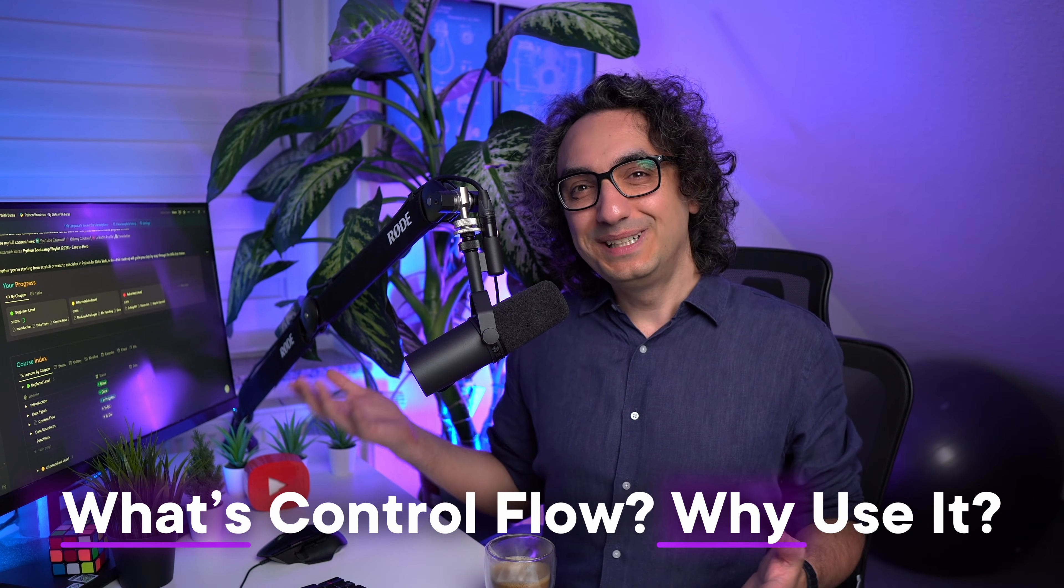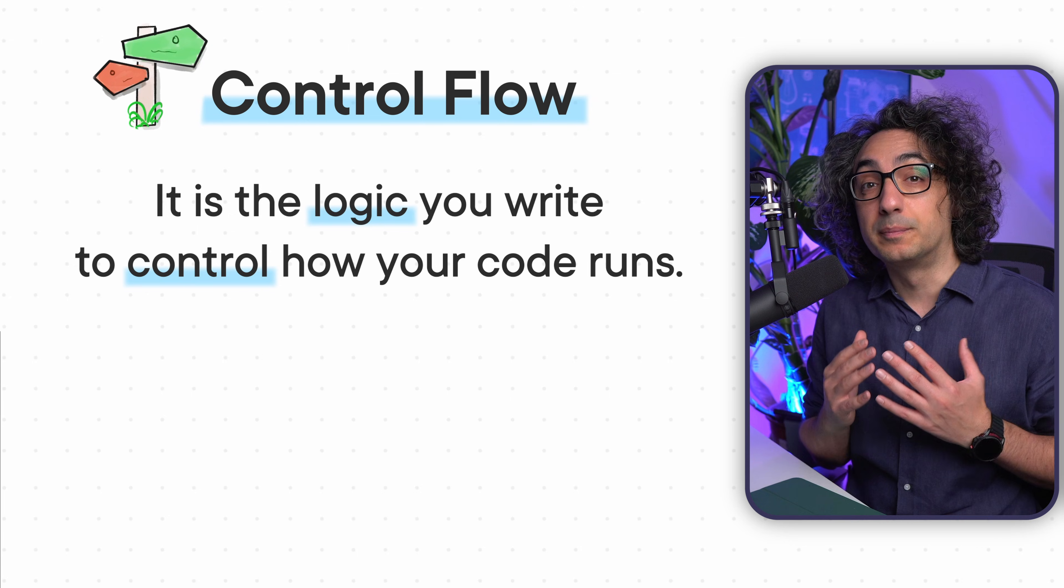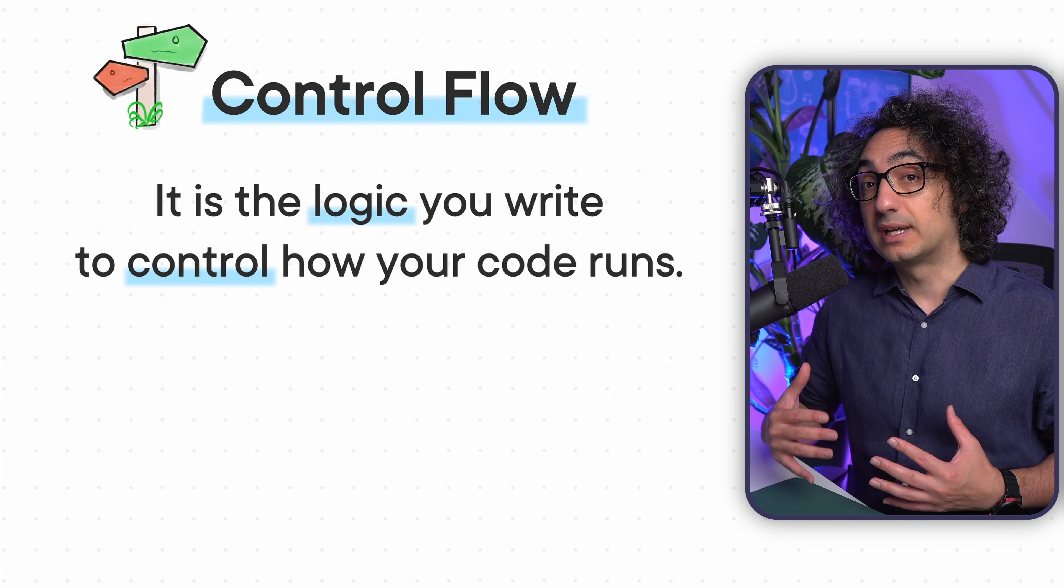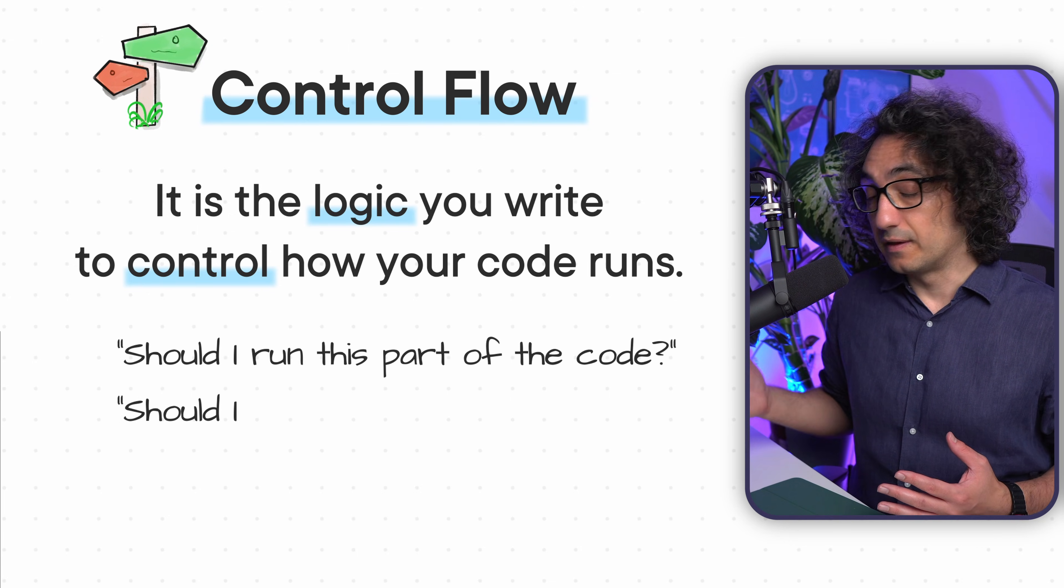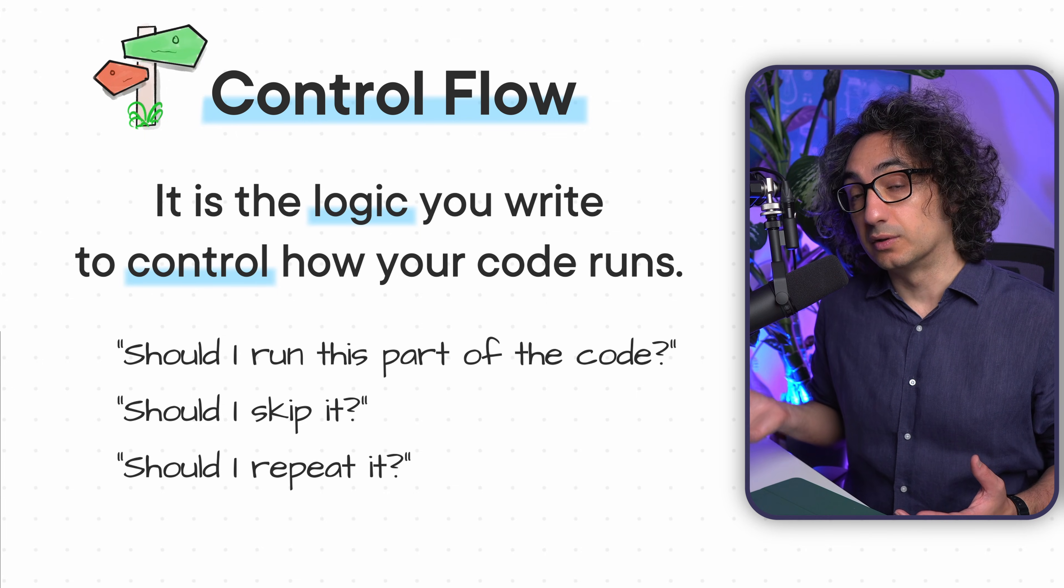Control flow is like a logic you build inside your code to control the path your program follows. This logic tells Python: should I run this part? Should I skip it? Should I repeat it? It's a logic in your code to decide what to do next.